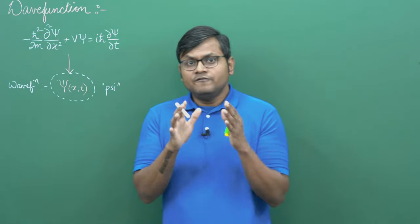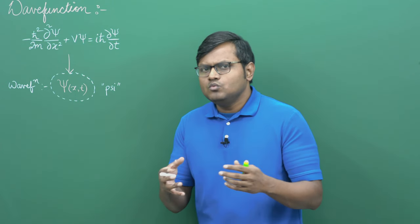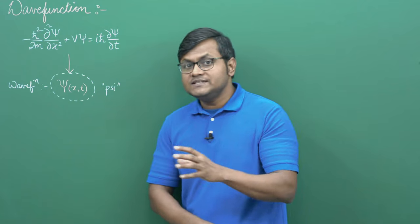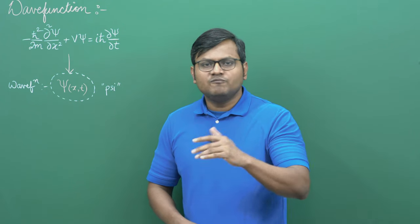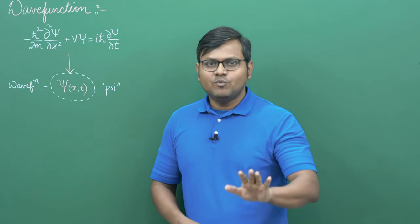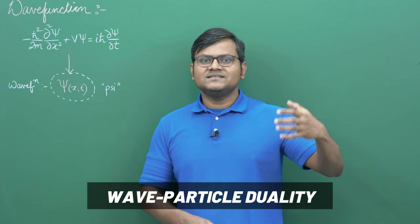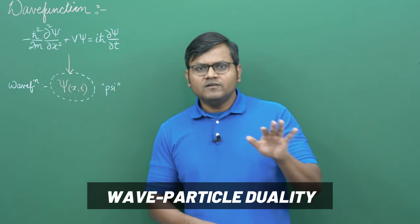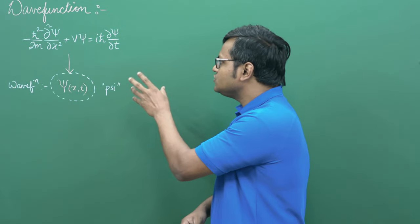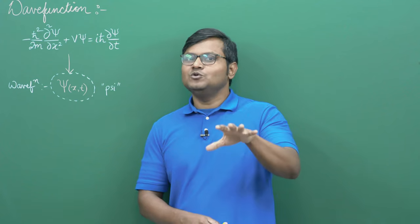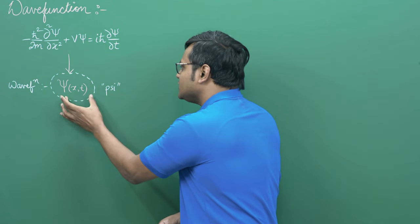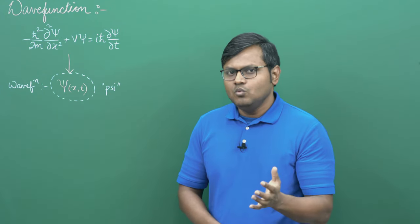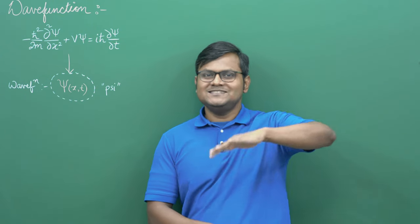Since this wave function is a complex function, what exactly does it represent? The Schrödinger's equation is a wave equation supposed to describe the matter waves of microscopic particles. We know that microscopic particles demonstrate wave-particle duality — their motion has a wave behavior associated with it. So the Schrödinger's equation tries to be the wave equation corresponding to those matter waves.